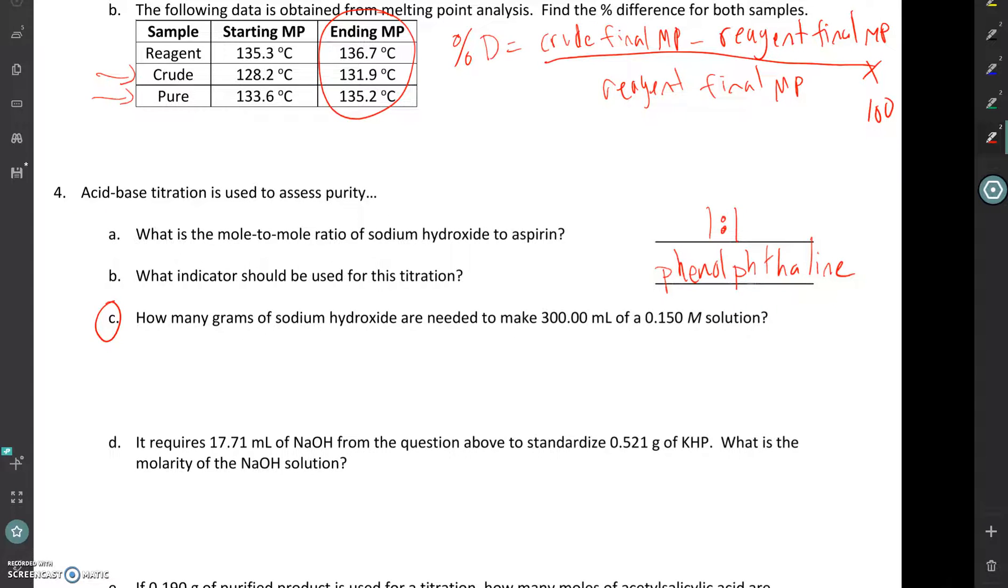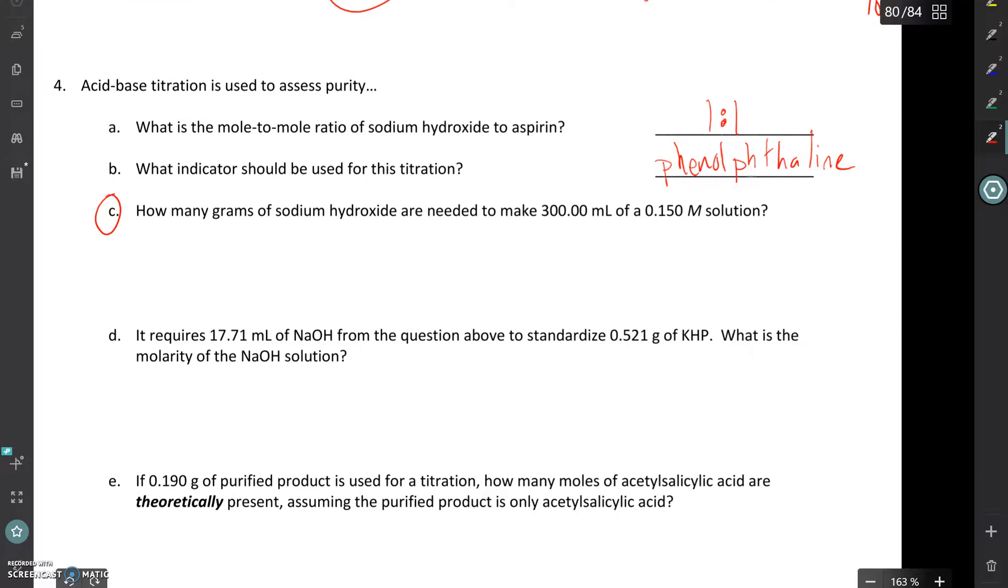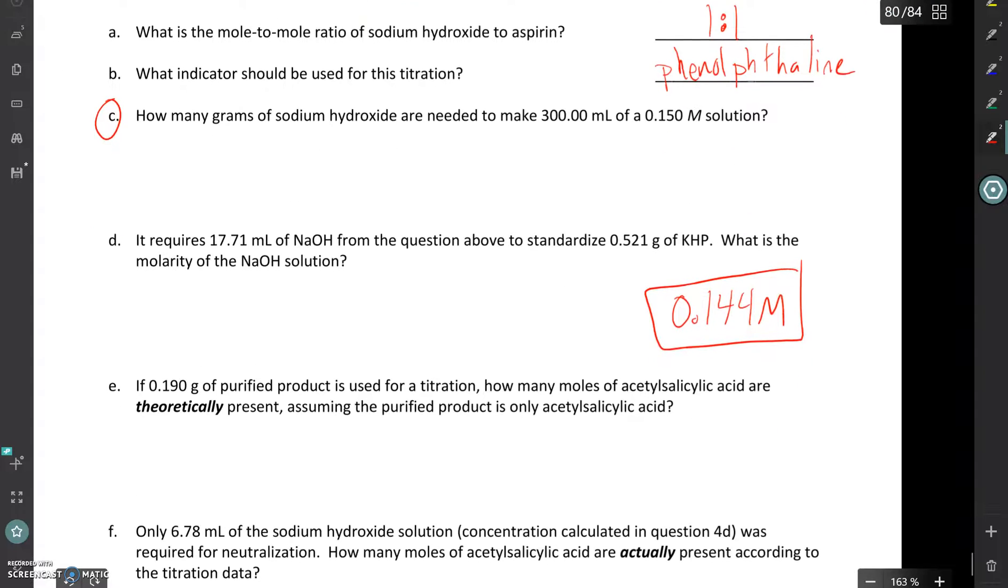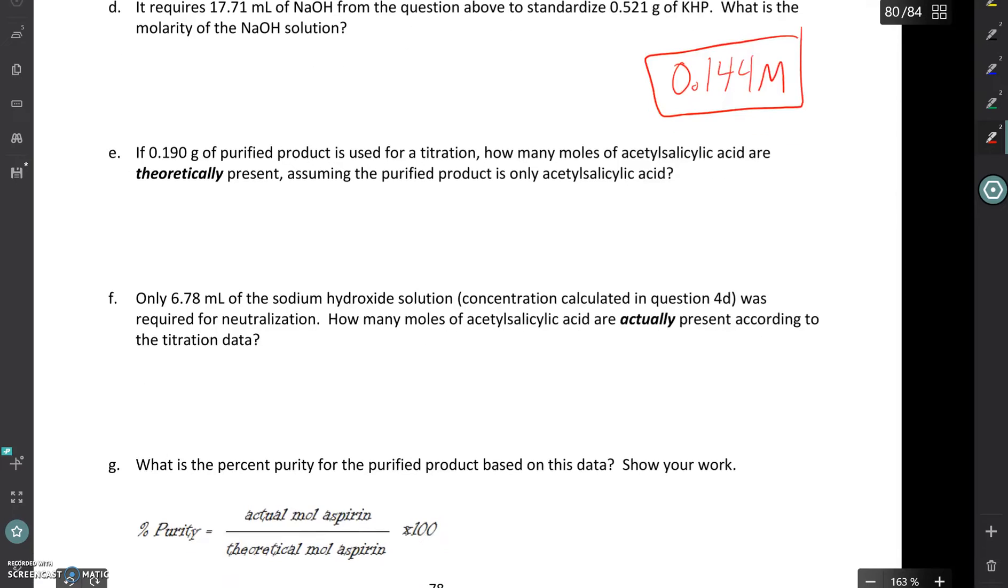You should be able to answer a question like letter C no problem you've already prepped your sodium hydroxide solution so this showed up in your theoretical calculation. We've walked through calculations like letter D before as well in particular the antacid titration lab so you can go back and look at your lab manual for that. I will tell you that the answer is 0.144 molar. We're going to need that number later so you can use that to check your work. The last three parts of this question are really what we're going to be using to calculate what we're calling percent purity.